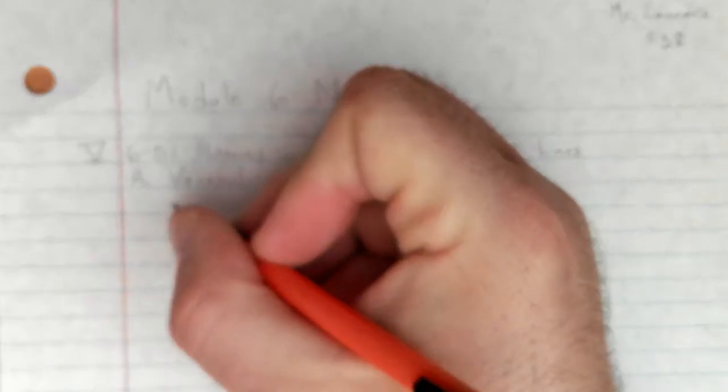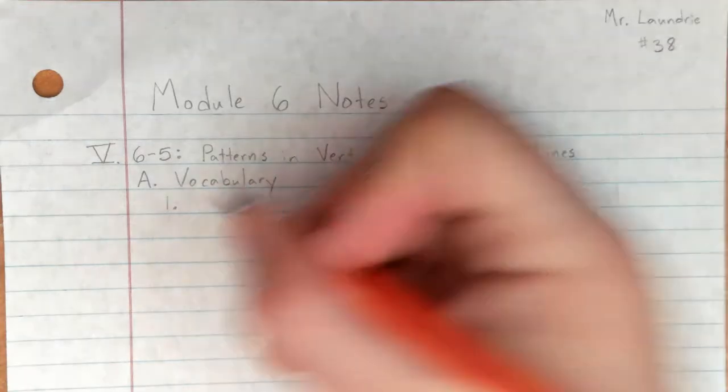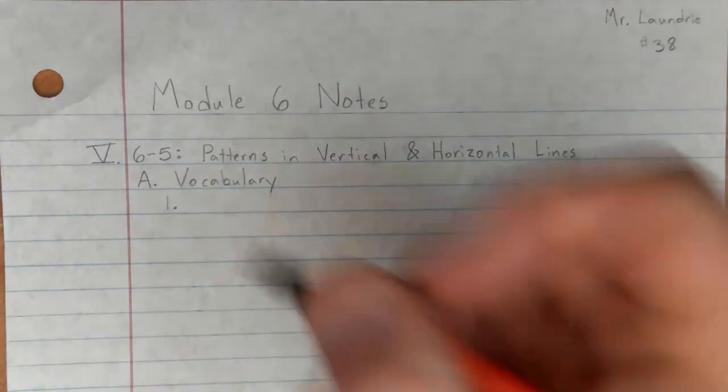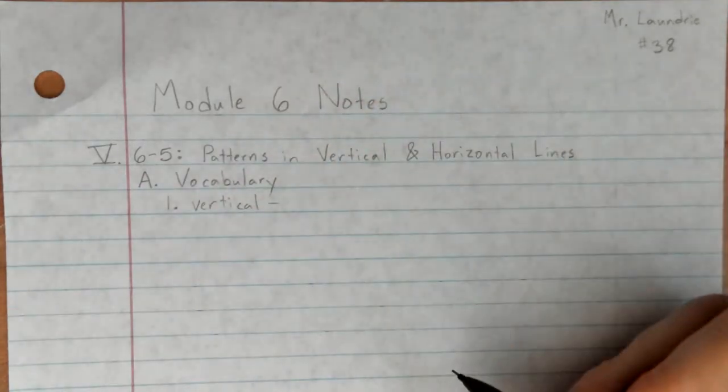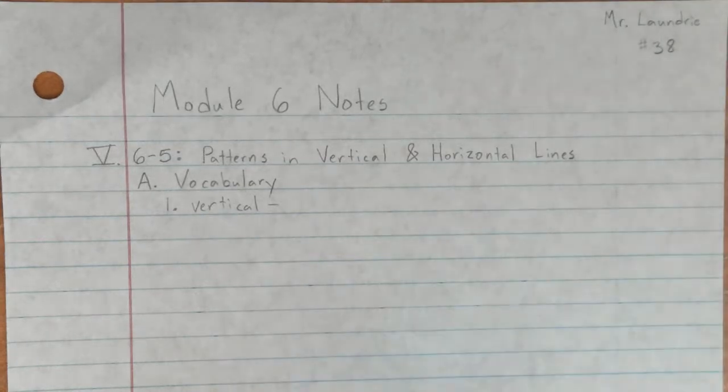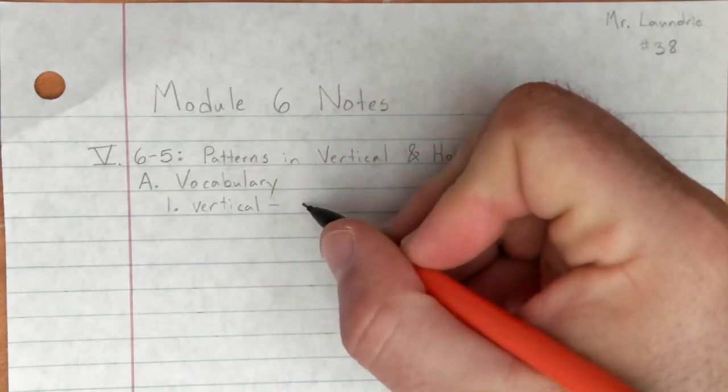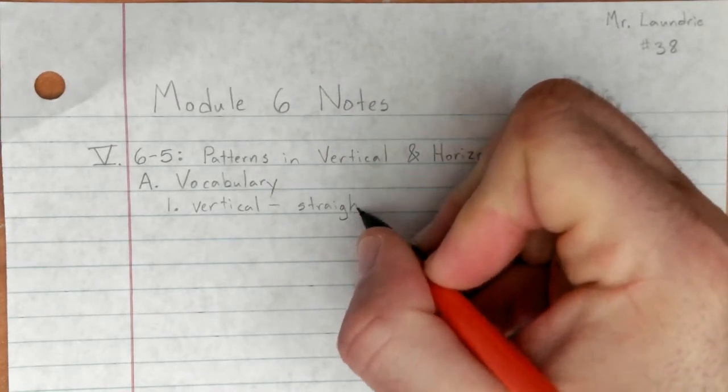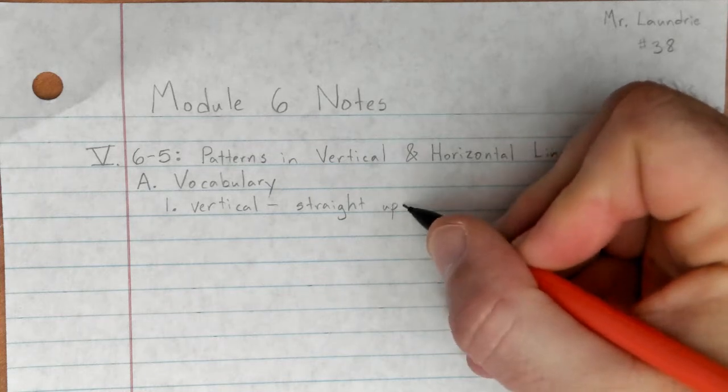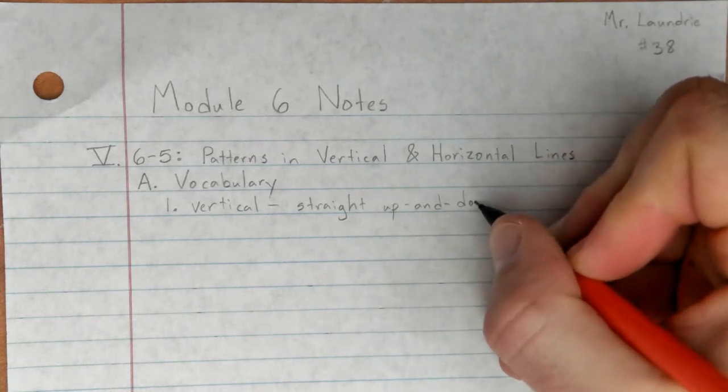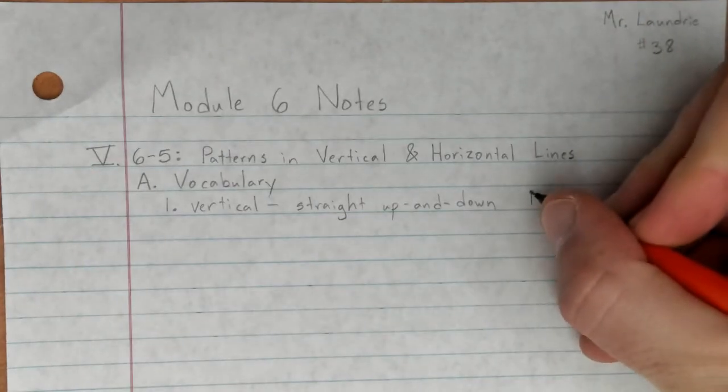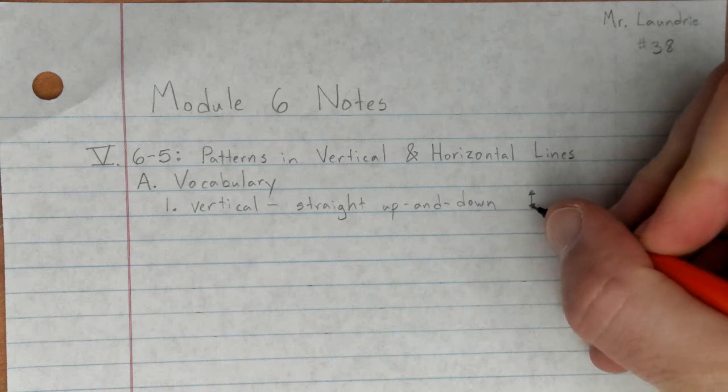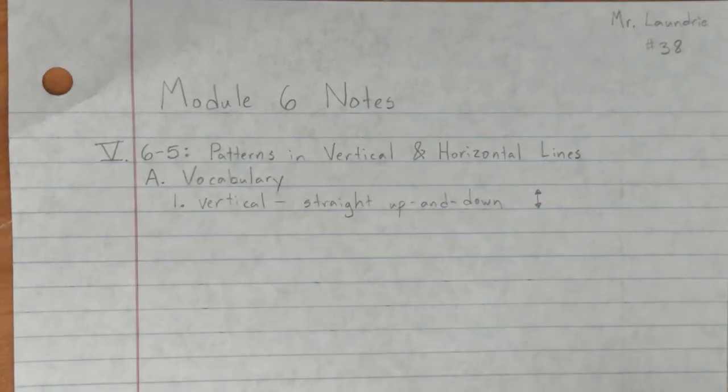Now for the vocabulary, the first terms we're going to start with are the terms that are up here. Vertical. I mean again, I know we've talked about this a lot, but just to make sure because it can get a little confused. Vertical, these are lines that are straight up and down. I'll even draw one like so, straight up and down. Those are vertical.